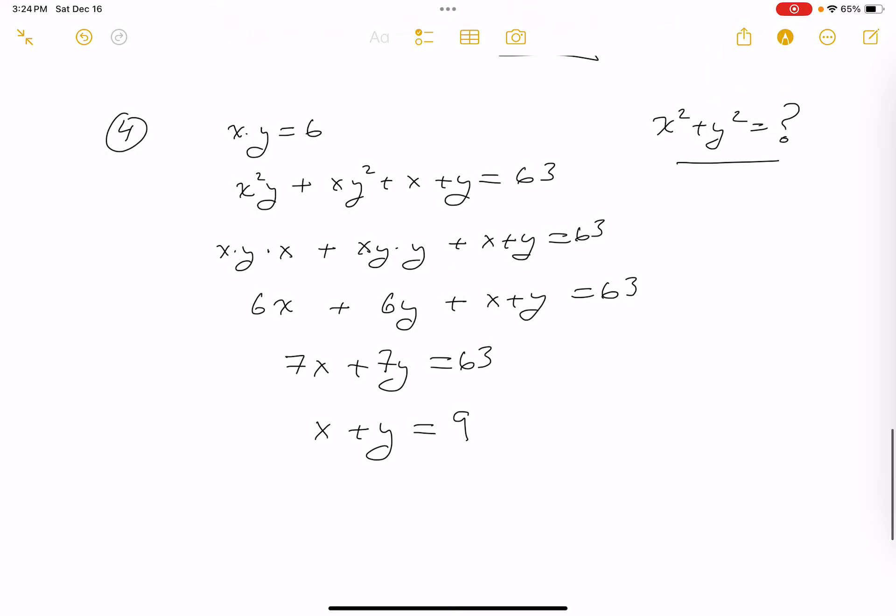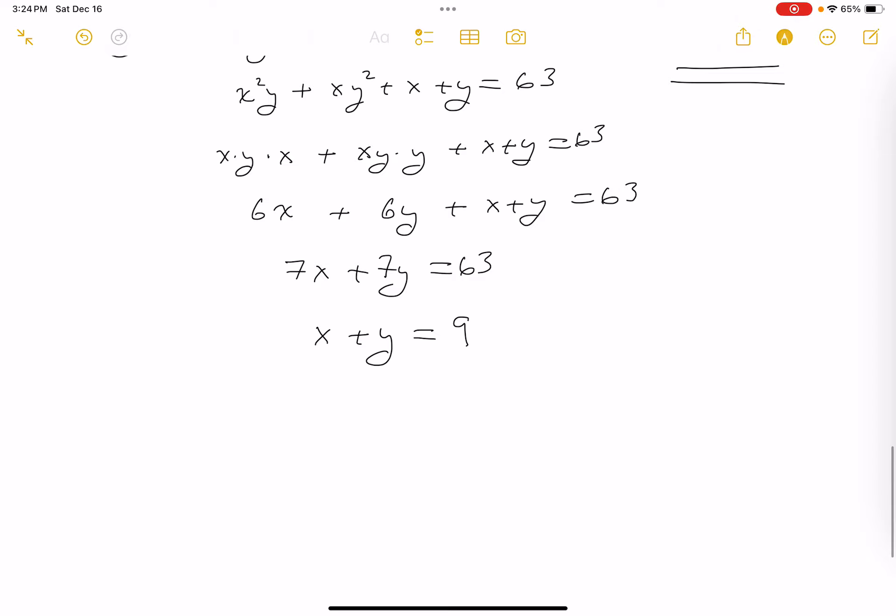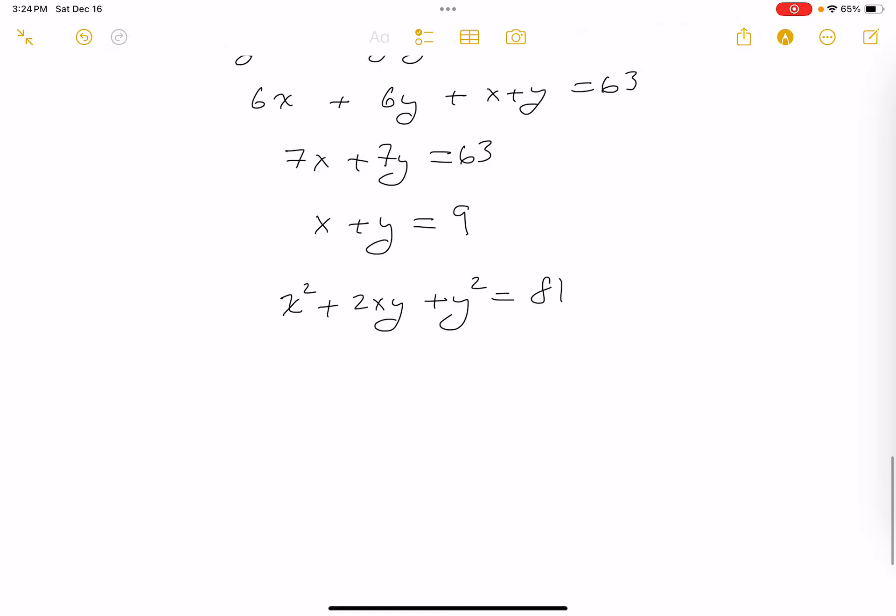But again, what am I looking for? I'm looking for this. I think I'm very close to it now. I'm going to square both sides. I get x² plus 2xy plus y² is equal to 81.